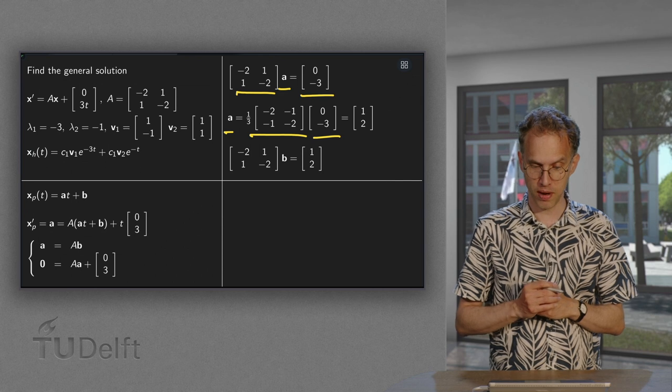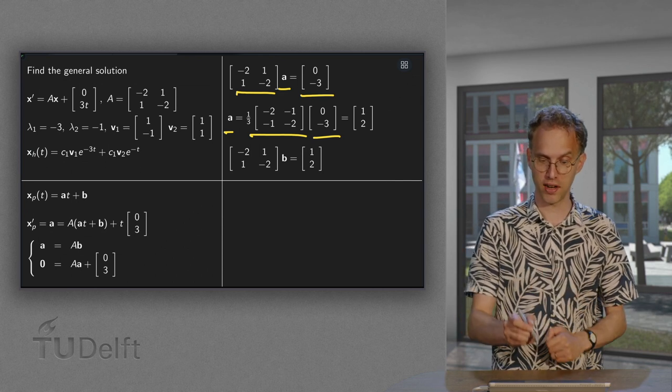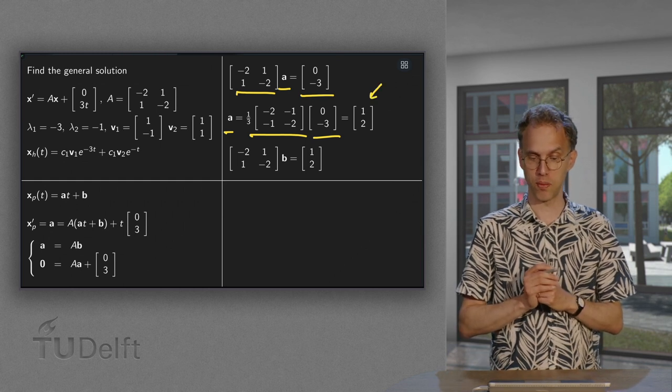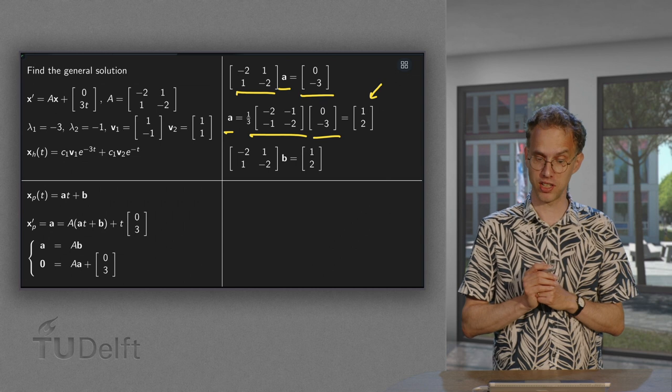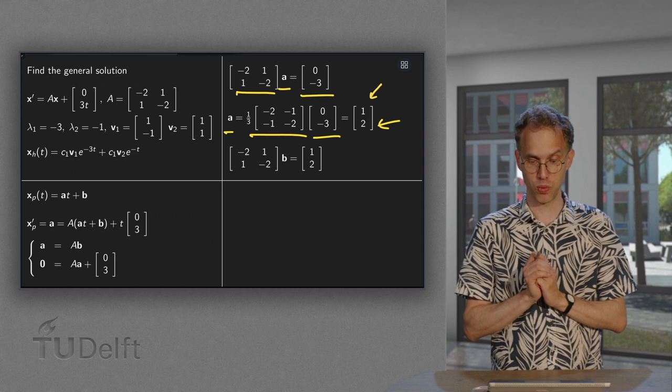And we can compute this. -2 times 0 plus -1 times -3 equals 3. Divide by 3 gives you a 1. And -1 times 0 plus -2 times -3 is 6. Divide by 3 gives you a 2. So, there we have our vector a equals (1, 2).